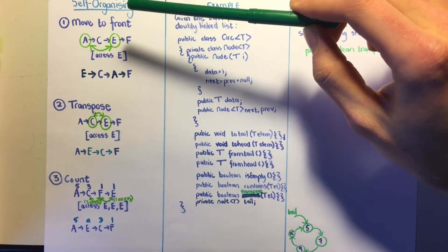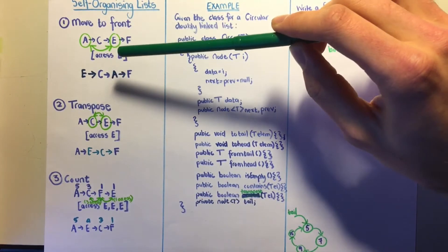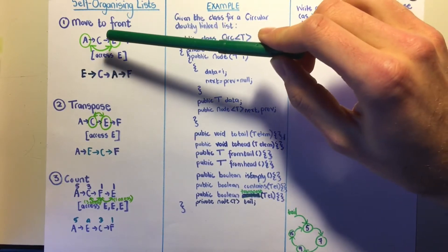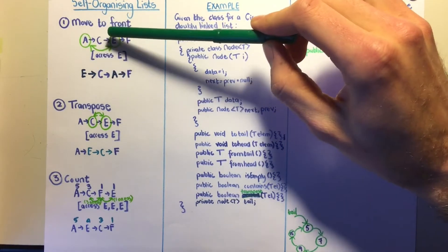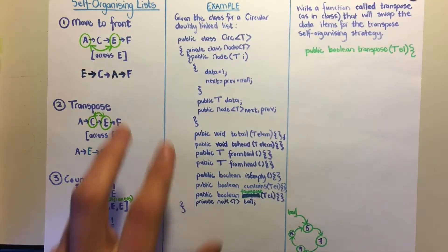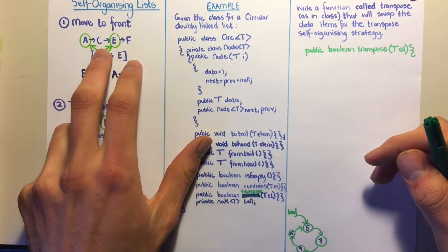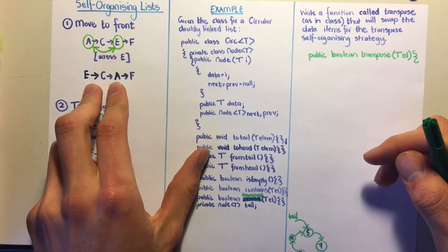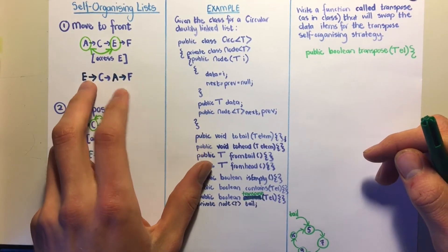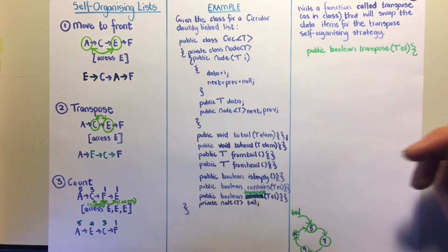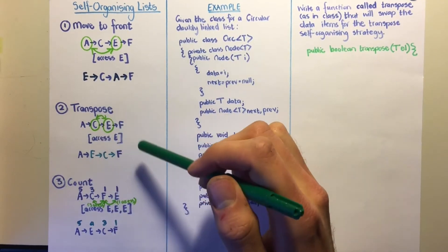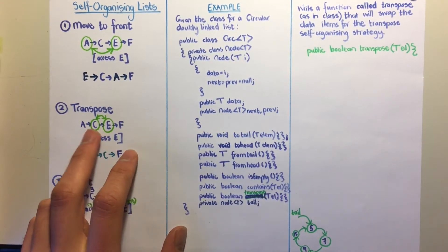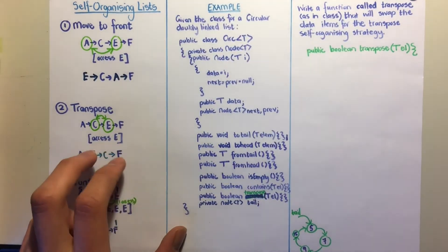The move-to-front method is when an element is accessed by the user. The accessed element and the front element are swapped directly. For example, given the list A C E F, if E is accessed, then A and E are swapped, and all other elements remain in the same positions.